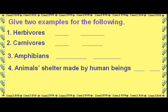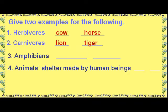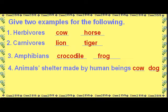Give two examples of the following. Herbivores: Cow, Horse. Carnivores: Lion, Tiger. Amphibians: Crocodile, Frog. Animals sheltered in homes made by human beings: Cow, Dog.